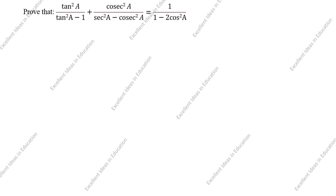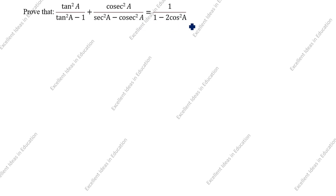Hi friends! Welcome to my channel Excellent Ideas in Education. Today we are going to solve this trigonometry identity problem. This is a very important problem. Prove that tan²a divided by (tan²a minus 1) plus cosec²a divided by (sec²a minus cosec²a) is equal to 1 divided by (1 minus 2cos²a).